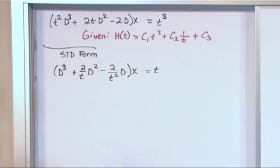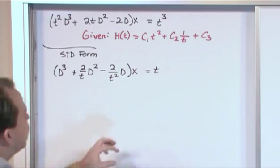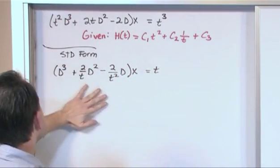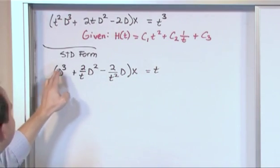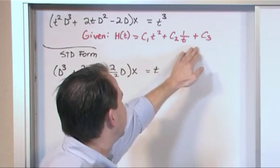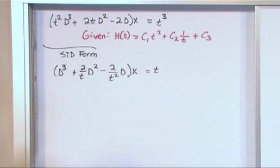Now typically the way you would do in all of the previous problems is we would take the right hand side, throw it away, make it 0 and find the homogeneous solution. But like I said, since we have these non-constant coefficients we don't know how to do that. So this problem actually gives us that answer. So that part's really done.